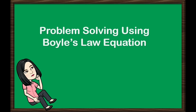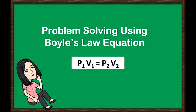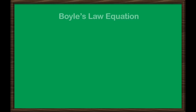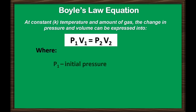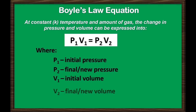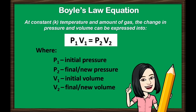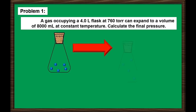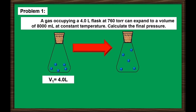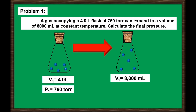Let us solve some problems using Boyle's Law equation. The equation is: initial pressure times initial volume equals final pressure times final volume. Remember, the K constant represents the temperature and the amount of gas. Problem number 1: A gas occupying a 4.0-liter flask at 760 torr can expand to a volume of 8,000 milliliters at constant temperature. Calculate the final pressure.